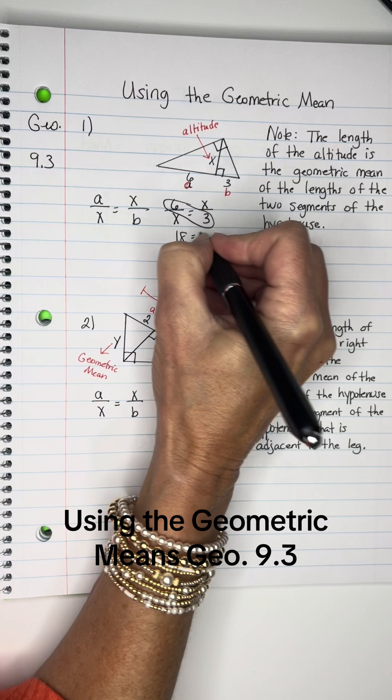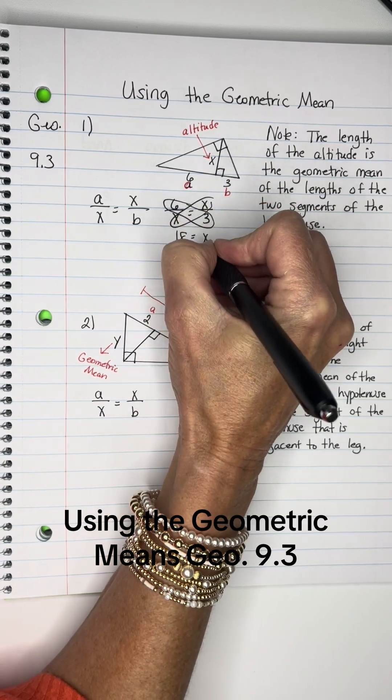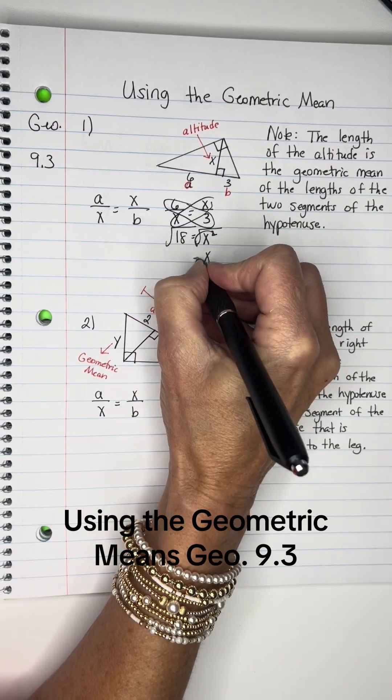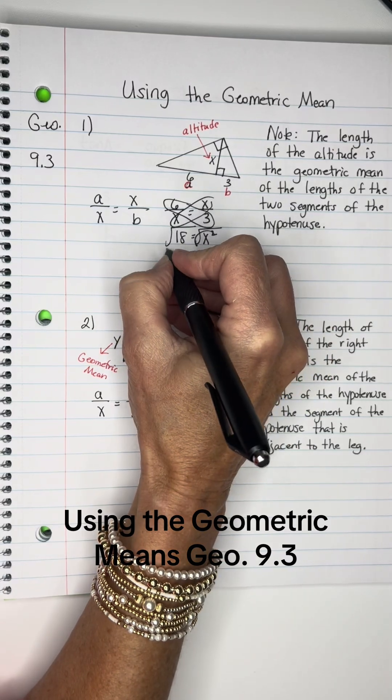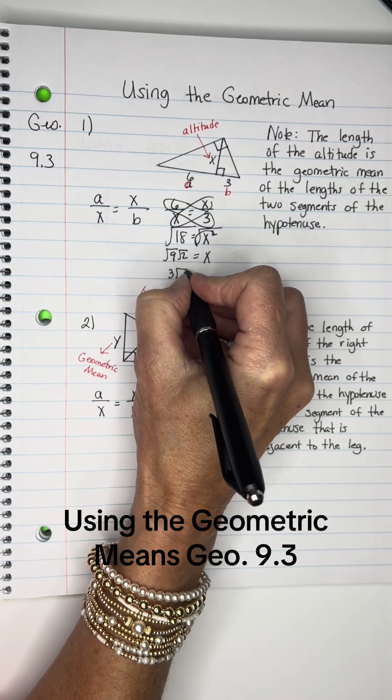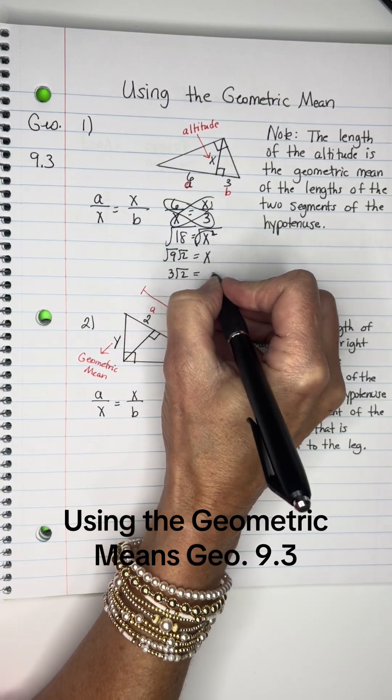So 18 equals X squared, and then you take the square root of both sides to free up the X. 18 is 9 times 2, and the square root of 9 is 3 root 2, which equals the X.